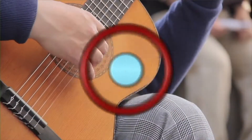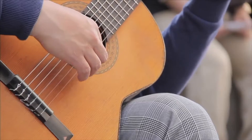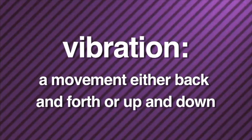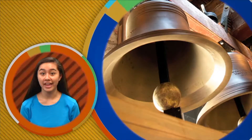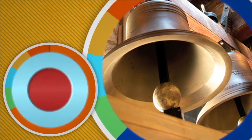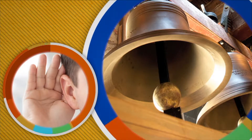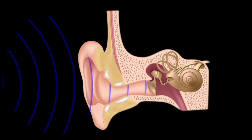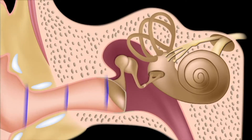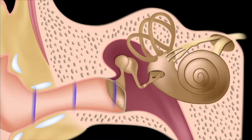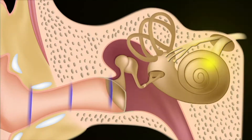That's simple — sound is energy. Here's how it works. When you strum a guitar, it causes the string to vibrate. Vibration is a movement either back and forth or up and down. You can see the vibration if you look at the guitar string up close as it makes a sound. The hitting of a hammer on a bell causes vibrations too. How does the sound get from the bell to your ear? Well, the vibration of the bell disturbs the surrounding air molecules, and the sound travels through the air to your ear in the form of a wave. Those waves travel into your ear where they vibrate your eardrum. The sound waves travel to your ear and your brain interprets the sound.